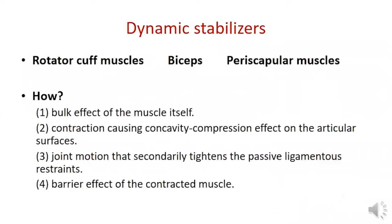The rotator cuff muscles, biceps, and the periscapular muscles dynamically stabilize the shoulder by the bulky effect of the muscle itself, contraction causing a concavity compression effect on the articular surfaces, and by joint motion that secondarily tightens the passive ligamentous restraints.